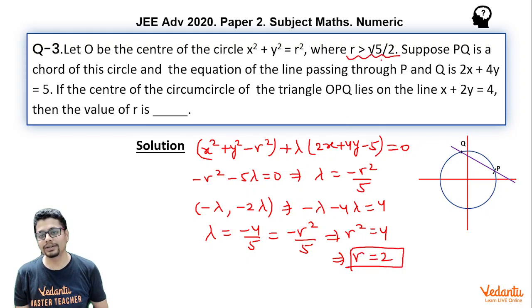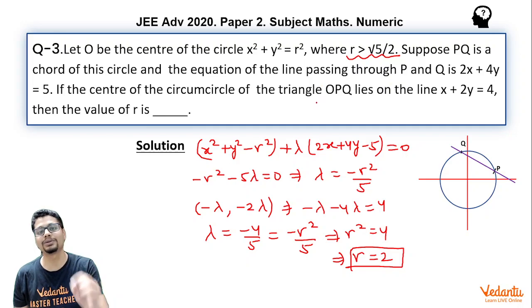Now you may wonder we have not used r > √5/2 information anywhere. This is just to ensure that this line 2x + 4y = 5 indeed meets the circle x² + y² = r² at two distinct points. That means this line should be secant to the circle. The center of the circle is (0,0) and the distance of the center from this line 2x + 4y = 5 is √5/2. Now if it is given that radius of the circle r is greater than √5/2, that ensures that this line is indeed secant to the circle, that means it will cut the circle at two distinct points. And that's exactly what we wanted here in this question and that's exactly what the question maker wanted to convey.